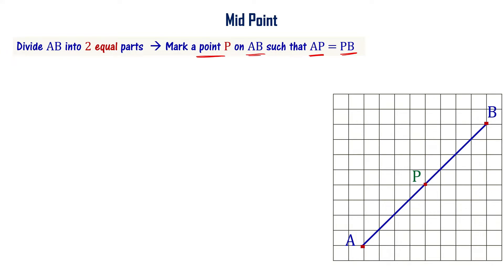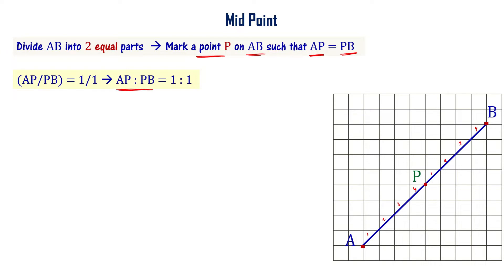If you look at this, it is one, two, three, four — four blocks. AP length equals PB length, so P is the midpoint. Otherwise I can say that AP divided by PB is equal to one by one, or AP is to PB equal to one is to one.